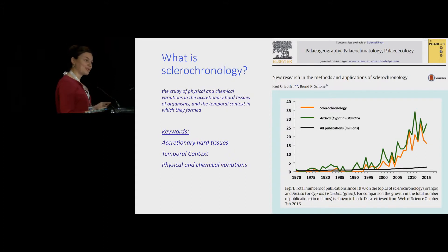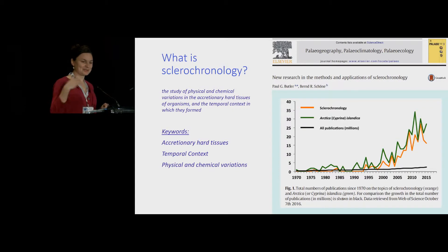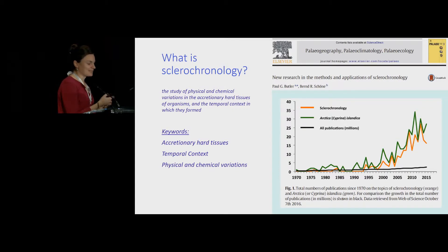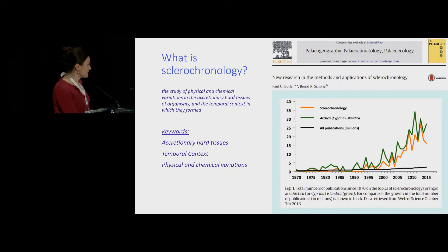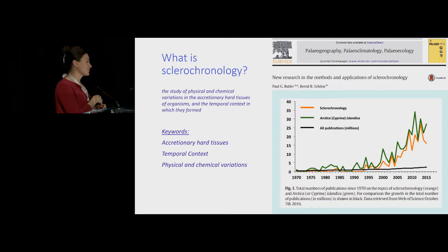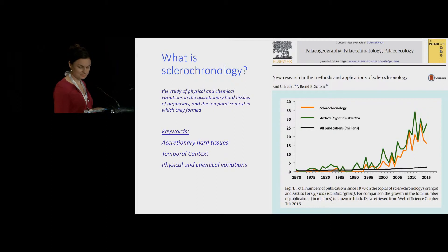This is a very rapidly growing field — frankly probably one of the reasons why it included me in this session with my more recent publication. This is an intro from a recent special issue showing publications using one species, Arctica Icelandica, in green and some other sclerochronological archives in orange. Really in the last decade or two, there's been rapid advancement in these techniques, and I think that will continue to grow. There are a lot of new students that have just been trained in this field.